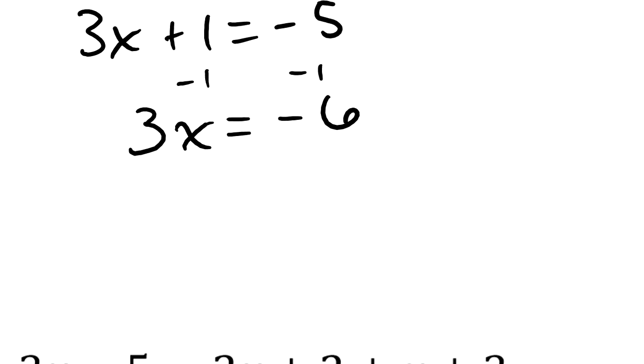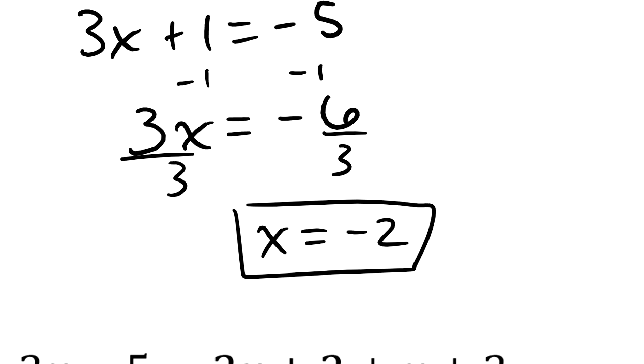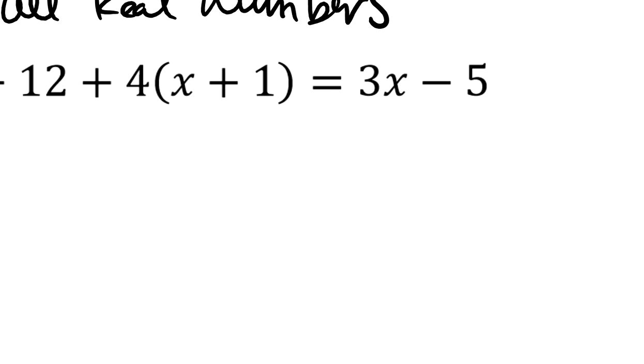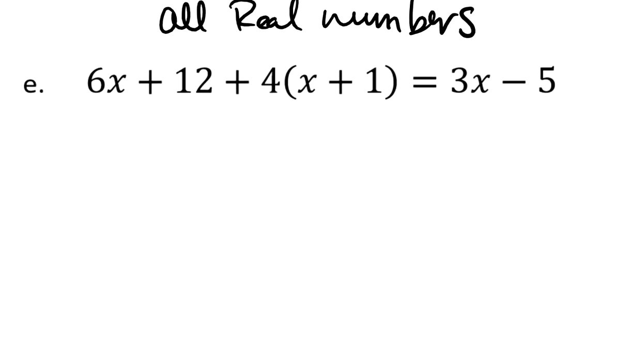Now I would divide both sides of this by 3. And when I do that, because it does simplify, I would write this as x is the number of negative 2. Moving on to part E.